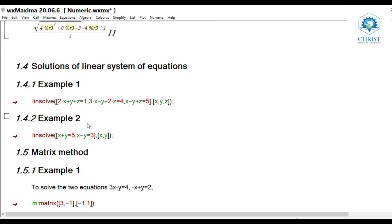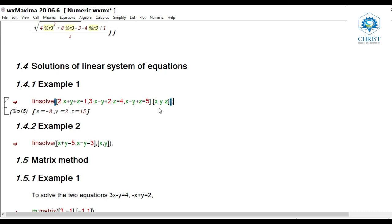Next, we move to solutions of linear systems of equations using the function linsolve. The command is linsolve([equations], [variables]). Example: linsolve([2*x + y + z = 1, 3*x - y + 2*z = 4, x - y + z = 5], [x, y, z]) — three equations with three unknowns gives a unique solution: x = -8, y = 2, z = 15. This problem can also be solved using the regular solve command.